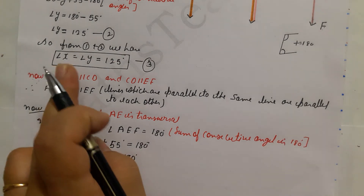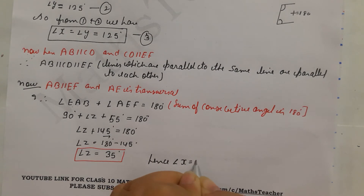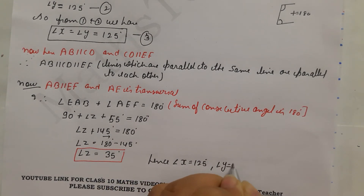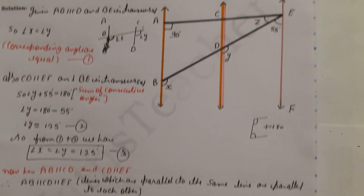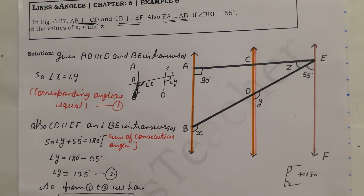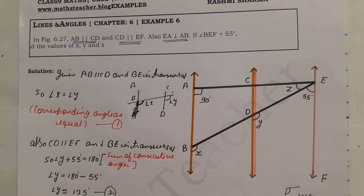Solving: 145 plus z equals 180, so angle z equals 180 minus 145, which gives angle z equals 35 degrees. Final answers: angle x equals 125 degrees, angle y equals 125 degrees, and angle z equals 35 degrees. I hope the question was easily understood and the concept is clear. All theorems must be remembered to solve these questions easily. Please comment, thank you.